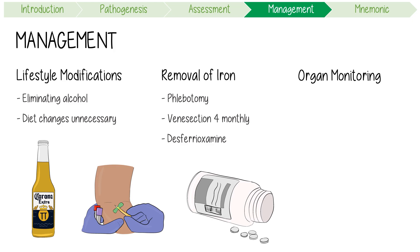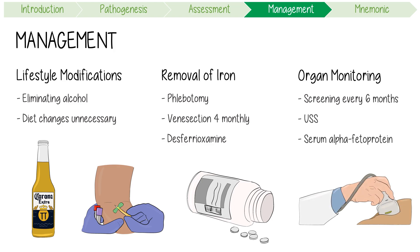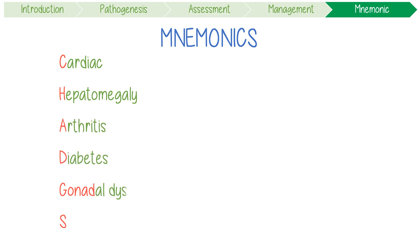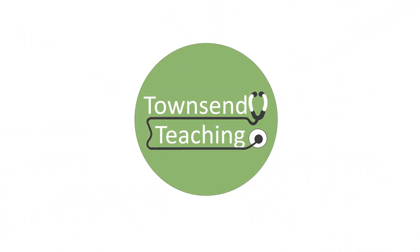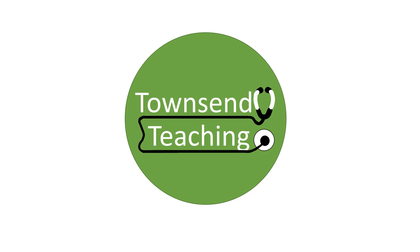Monitoring for organ damage, especially liver involvement, is vital. Patients with cirrhosis have a risk of primary liver cancer even when complete iron depletion is achieved — these patients should be screened every six months with hepatic ultrasounds and serum alpha-fetoprotein levels. To summarize: CHAD GONADS tells us which organs are impacted, and for management I use the mnemonic 'abstain, drain the vein, desferoxamine, and retest again' — reminding us to abstain from alcohol, have regular venous sections or use a chelating agent, and continue monitoring organ health.